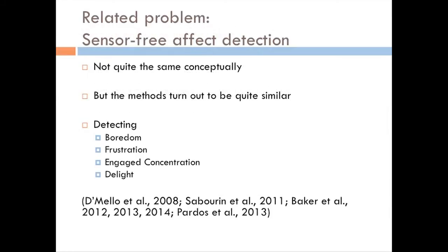A related problem is sensor-free affect detection. It's not quite the same conceptually, but the methods turn out to be quite similar. People do things like detecting whether a student is bored, whether they're frustrated, whether they're in a state of engaged concentration, and whether they're in a state of delight.